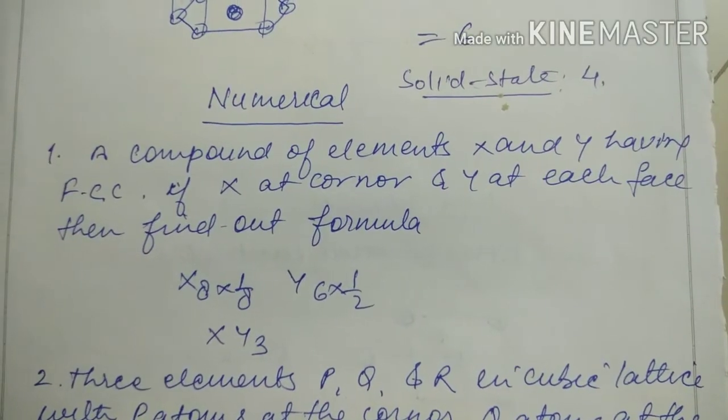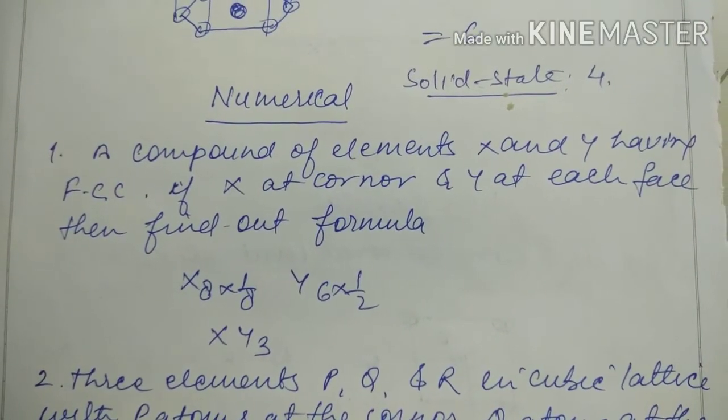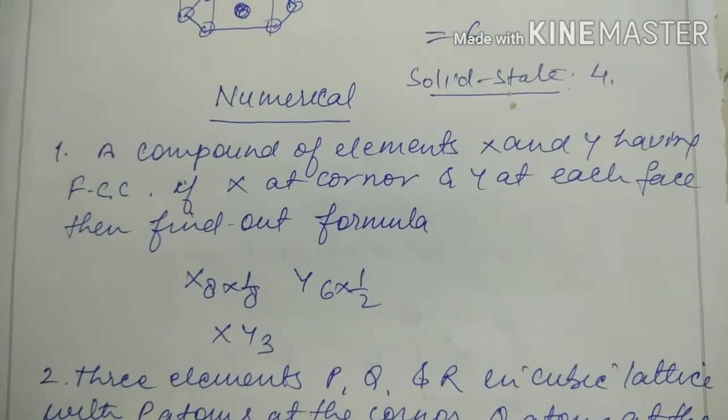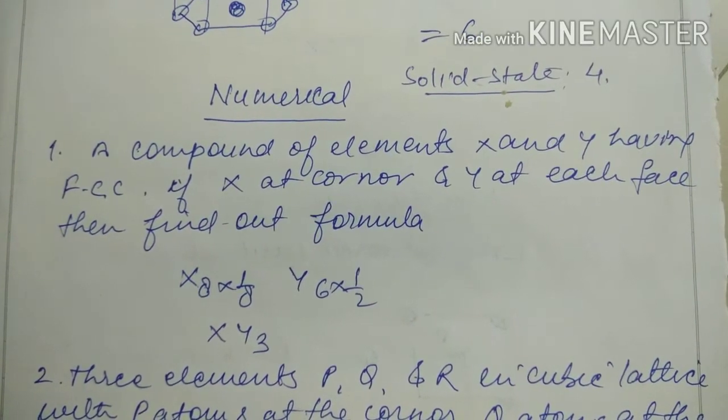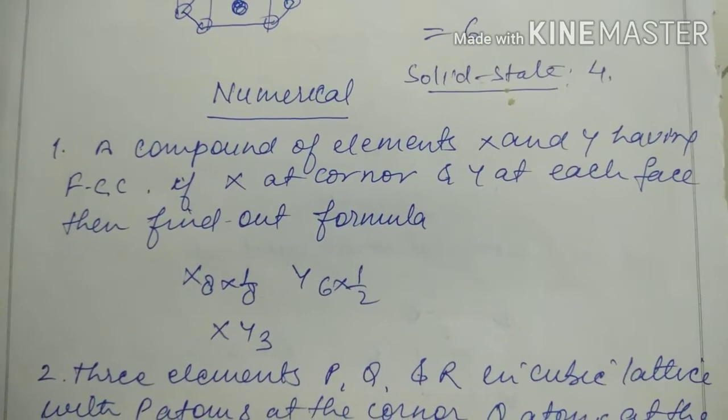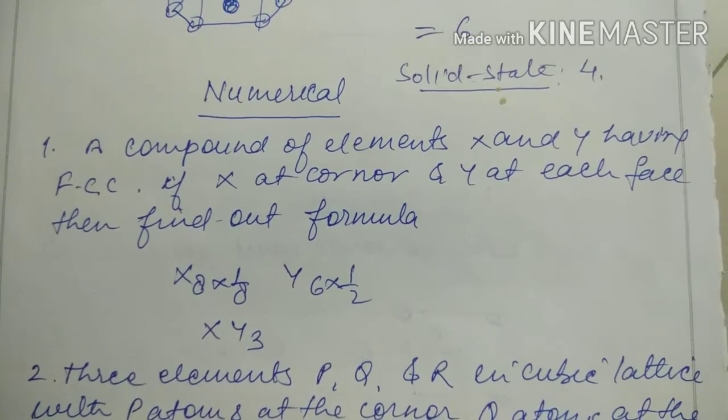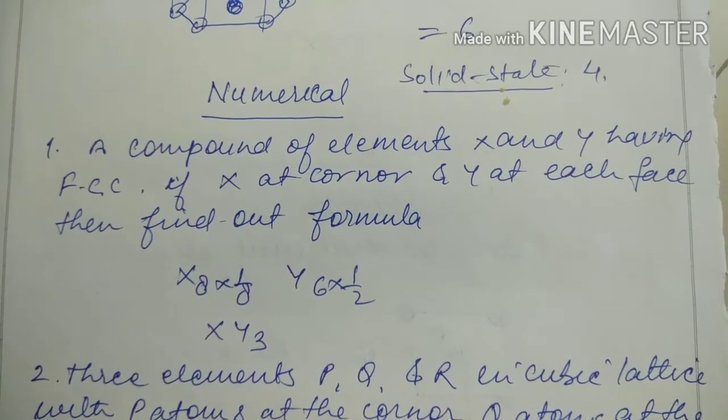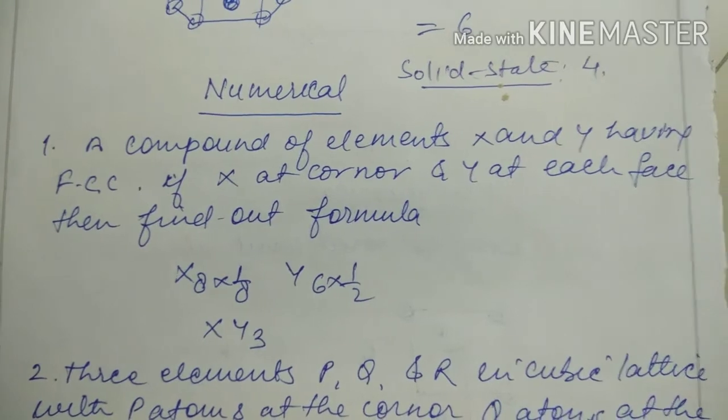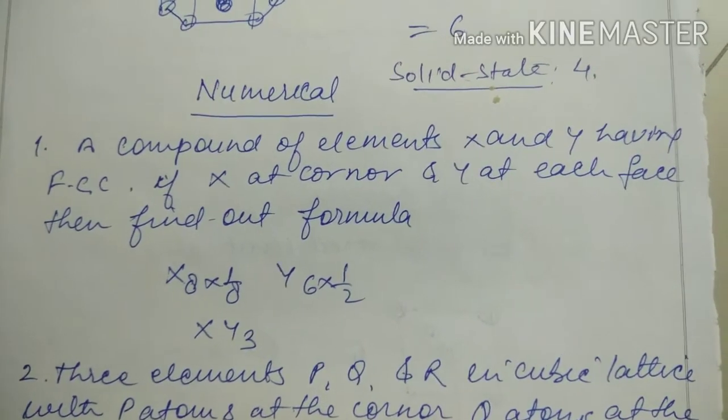Most welcome students. Today's topic is numerical problems related to unit cells. The first question is: a compound of element X and Y having a FCC lattice of X at the corner and Y at each face, find out the formula.